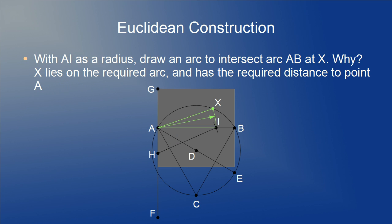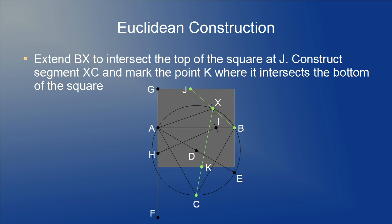To find X then, we just need to take AI as a radius and draw an arc to intersect the arc AB at X. This has to be our point since it's the only point with the required distance to point A and it lies on the arc which will guarantee that angle AXB is 120 degrees. To complete the construction with all required segments, simply extend BX to the top of the square at J and for the bottom segment, construct segment XC which by the inscribed angle theorem will bisect the 120 degree angle AXB into a pair of 60 degree angles as required.